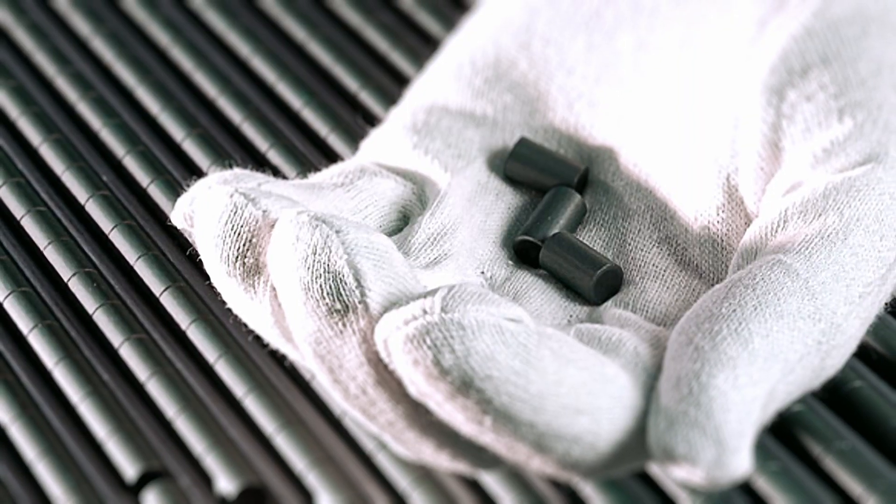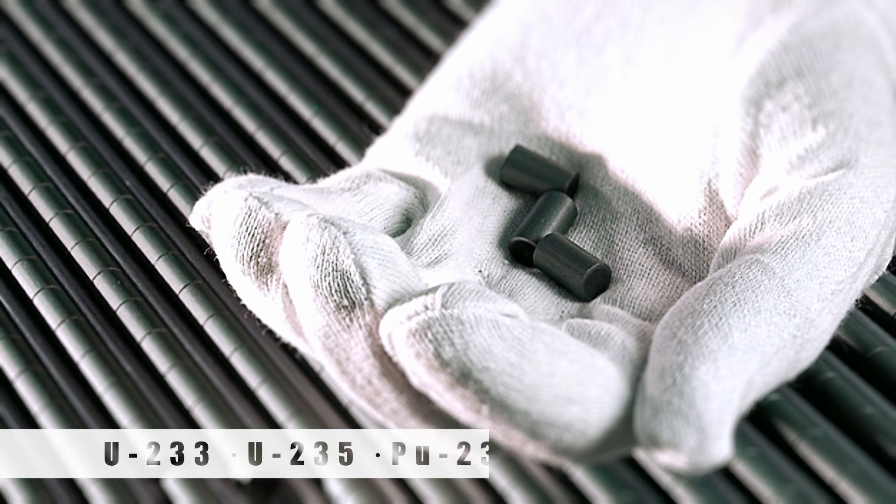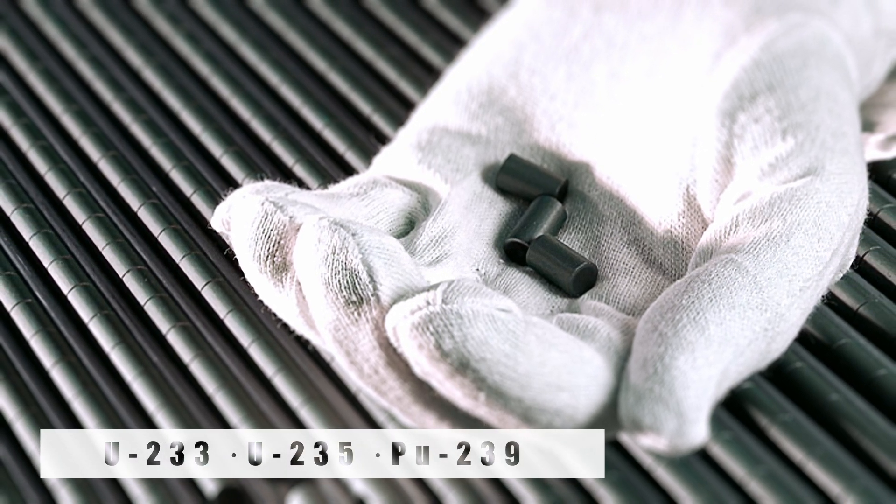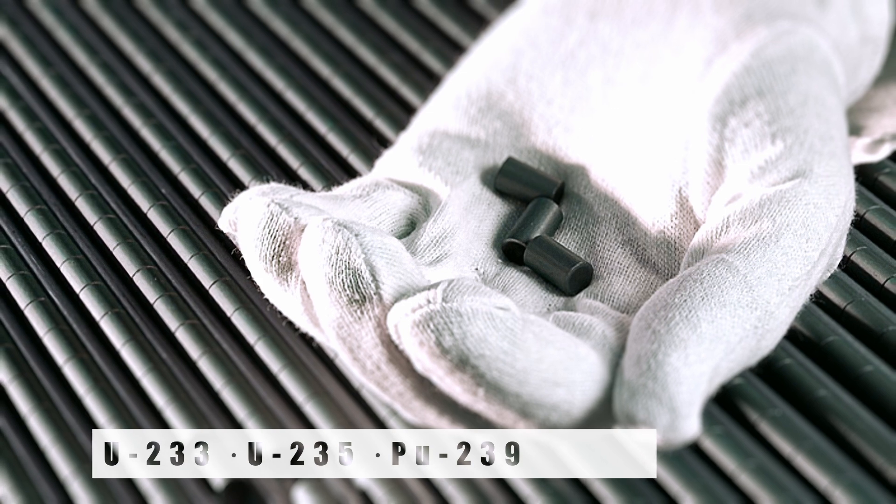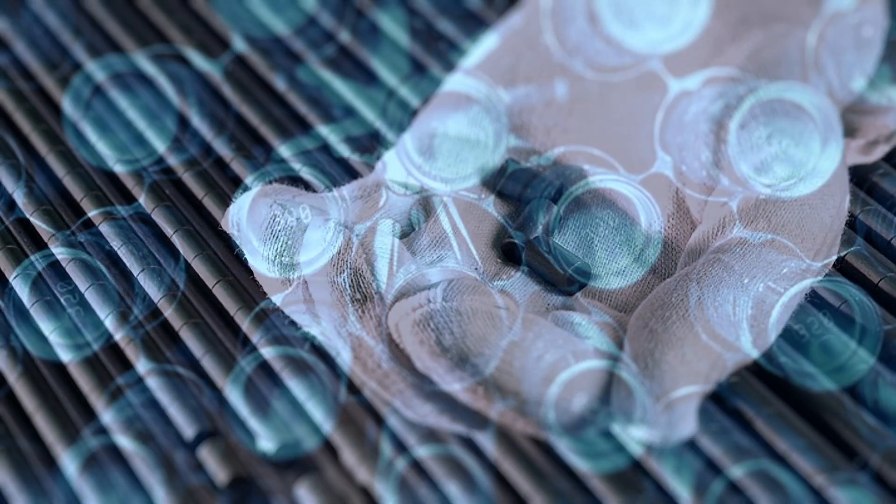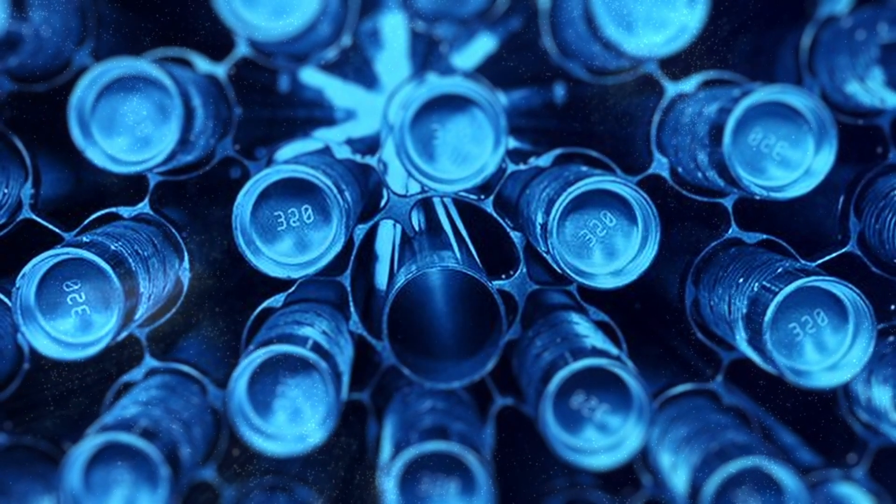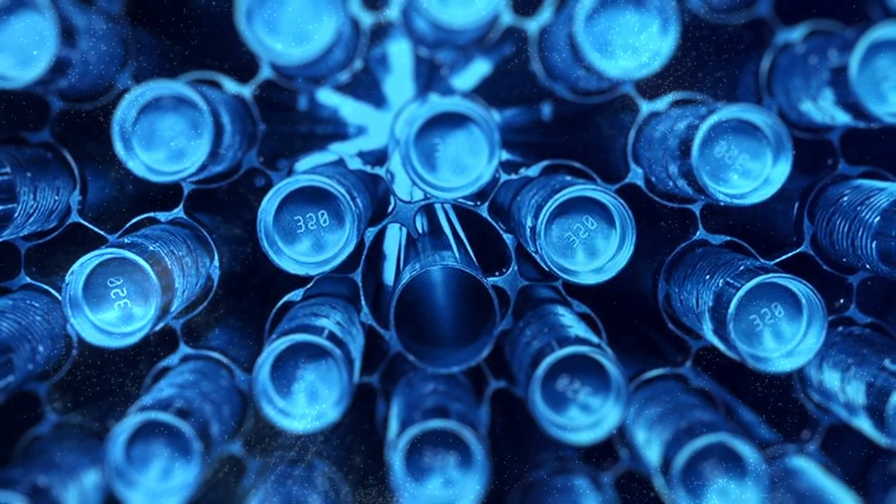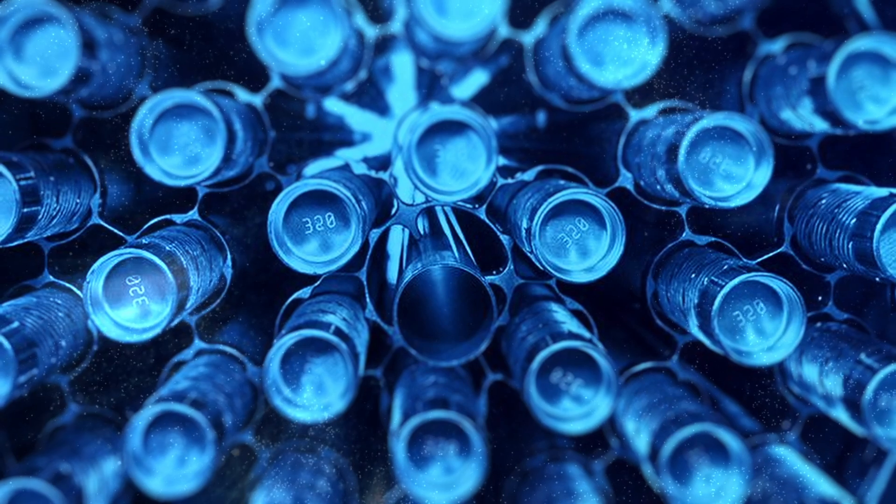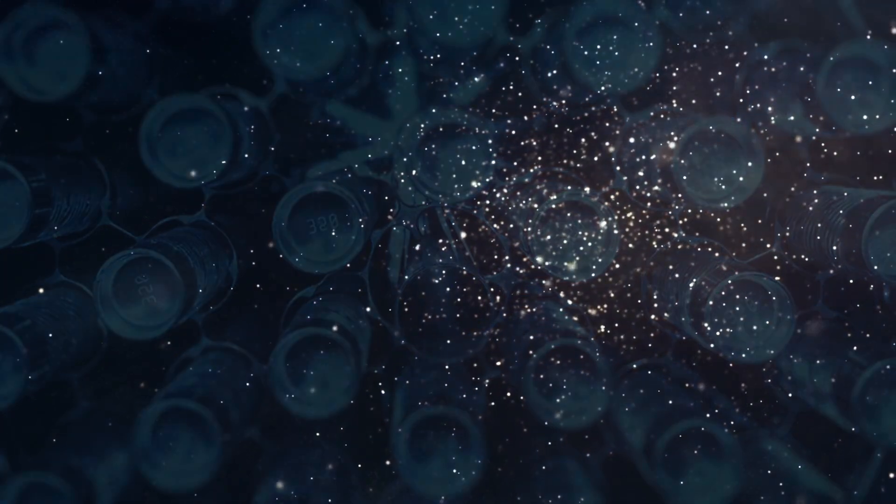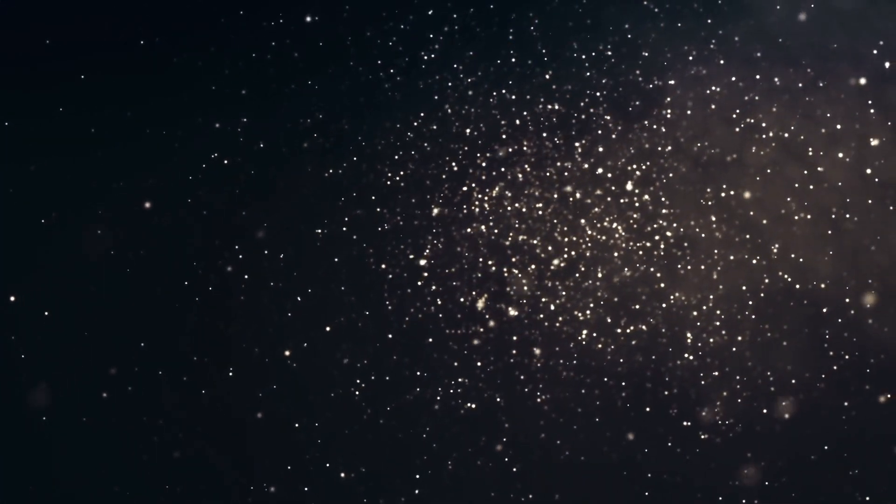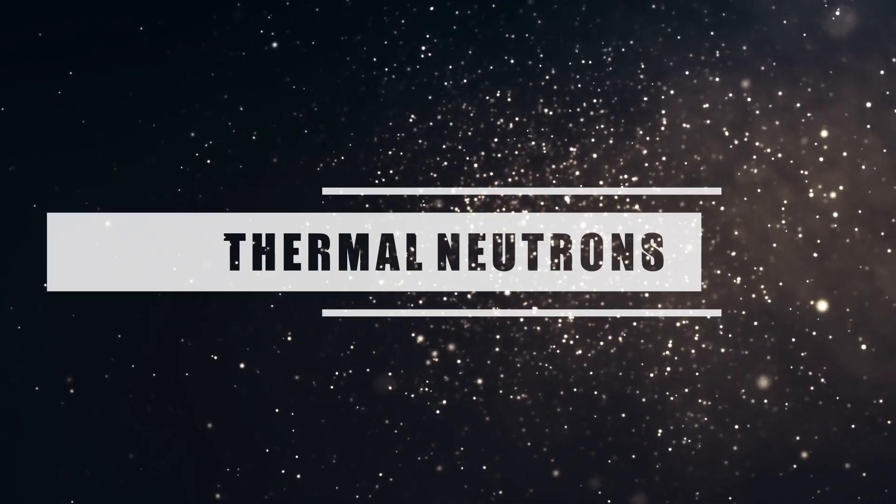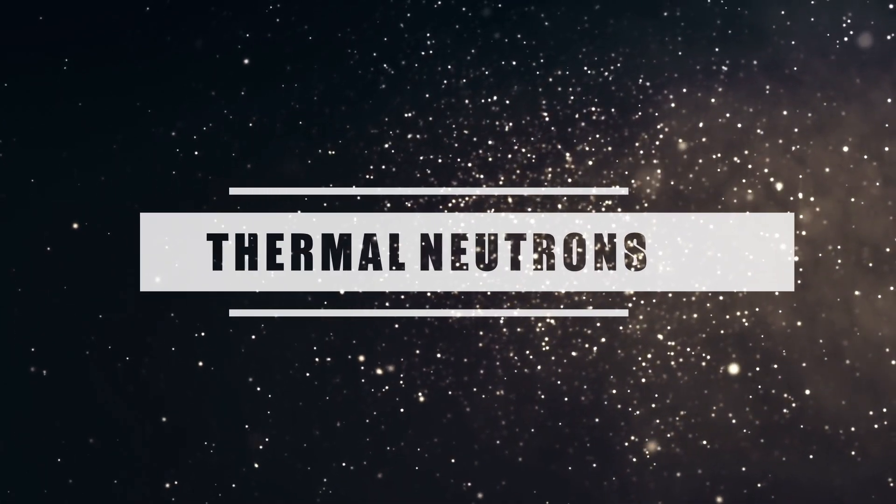For most fission reactors, the isotopes uranium-233, uranium-235, or plutonium-239 are used as the nuclear fuel. This is primarily due to their availability in large enough quantities, as well as their ability to sustain a chain reaction as they emit neutrons themselves in the fission process. These isotopes are also considered fissile in that they can undergo fission under the bombardment of low-kinetic-energy free neutrons, or thermal neutrons.